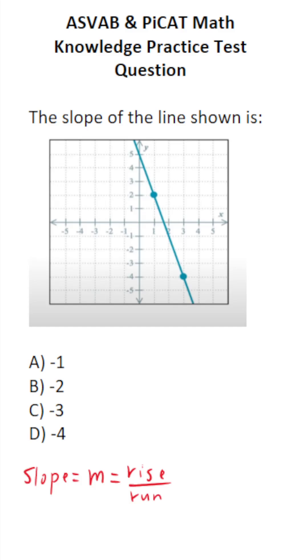That is how far you have to move vertically and horizontally to get from point to point on the line. And algebraically, that's y2 minus y1 over x2 minus x1.